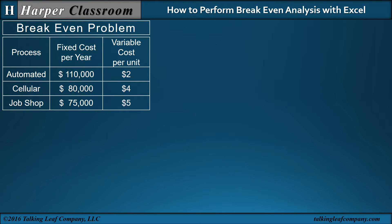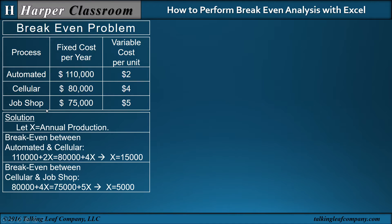From previous videos, we've seen the breakeven problem where the three processes — automated, cellular, and job shop — each have a fixed cost and variable cost per unit of production. We've also seen the solution, where X is the annual production: the breakeven between automated and cellular is 15,000, and between cellular and job shop is 5,000. Now let's see how to solve this with Excel.